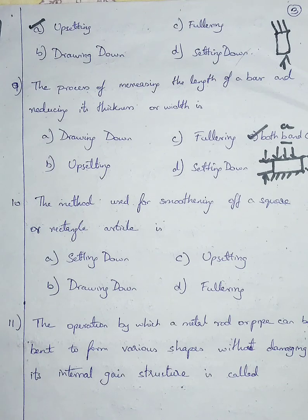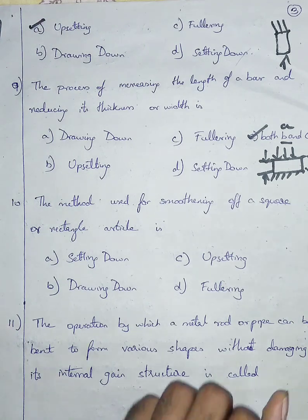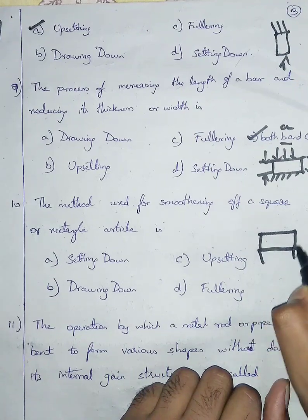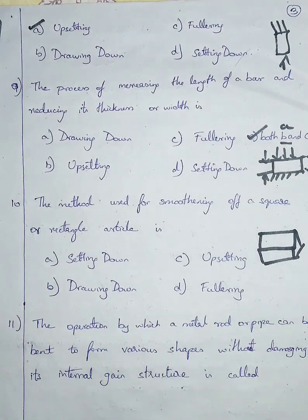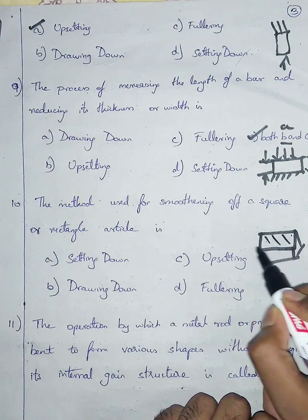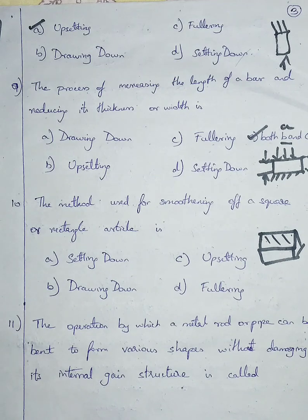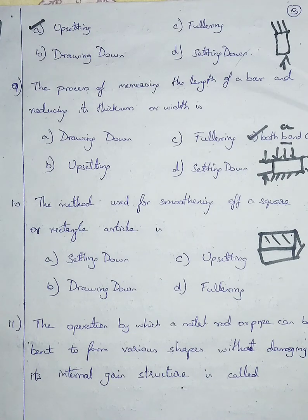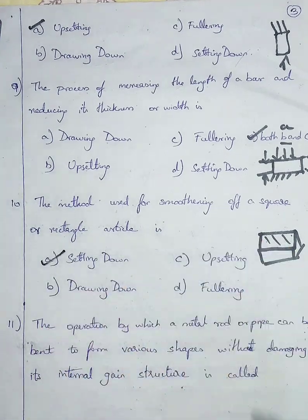Question number ten: the method used for smoothening of a square or rectangular article is — option A: setting down, option B: drawing down, option C: upsetting, option D: fullering. The process of smoothening the surface of a square or rectangular article is called setting down. So I'm going with option A.